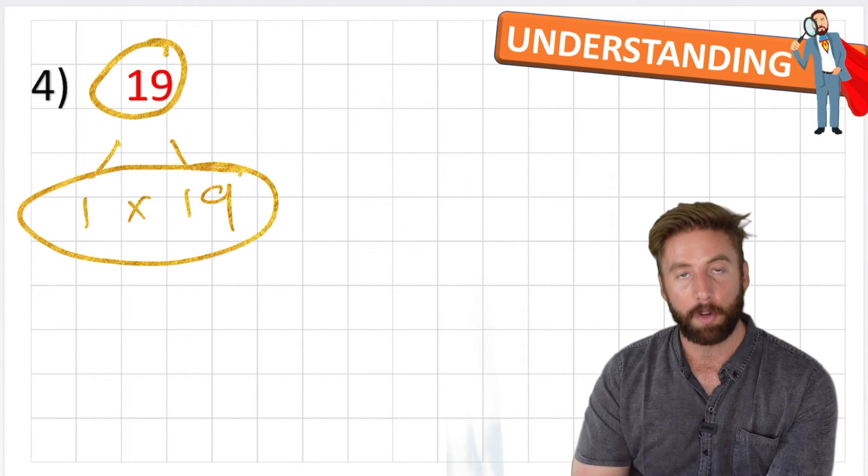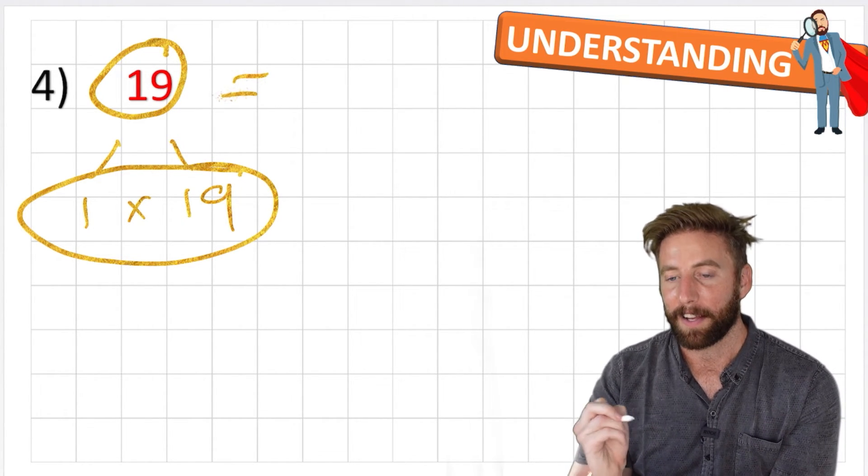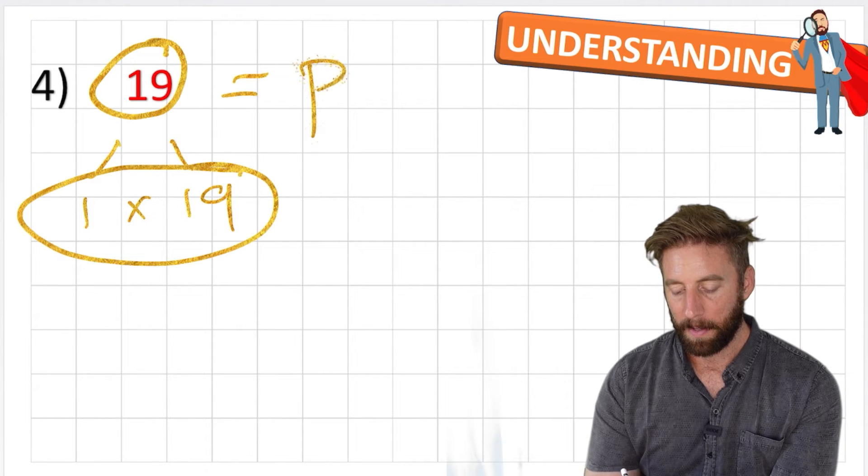So therefore, we know that these are the only two numbers that can be multiplied together to equal nineteen. So this equals, that's right, a prime number.